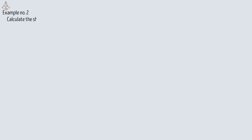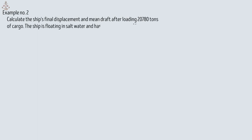For the second example: calculate the ship's final displacement and mean draft after loading 20,780 tons of cargo. The ship is floating in salt water and has an initial draft of 3.60 meters. I will use two methods to find the answer, and using both methods will show us which one gives the more accurate answer.